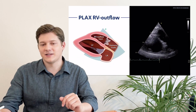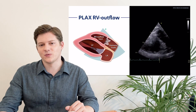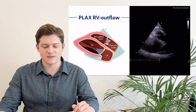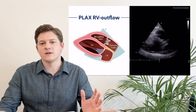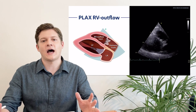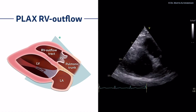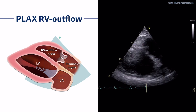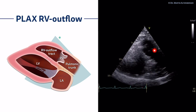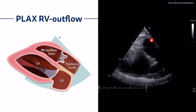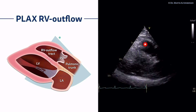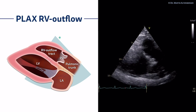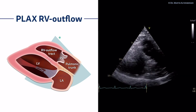The second atypical view of the long axis is the parasternal long axis right ventricular outflow view. I have to admit I do not perform it on a regular basis — only if I cannot perform it in a parasternal short axis. The outflow refers to the right ventricular outflow tract, the pulmonic valve, and the pulmonic trunk. You can see the right ventricular outflow tract and assess the motion and right ventricular function of the outflow tract, which also contributes to overall global right ventricular function.